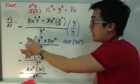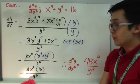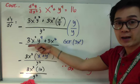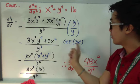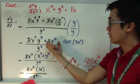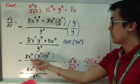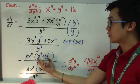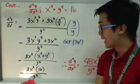Pwede pa natin i-simplify yung numerator. So again kailangan natin i-simplify bawat step natin. Yung numerator pwede natin i-simplify yan using the greatest common factor. Pull out natin ang 3x² kasi yun yung common dito sa dalawang term: 3x² and 3x⁶. With the greatest common factor 3x², pag nilabas natin ito, ang matitira na lang sa loob is x⁴ plus y⁴, all over y⁷. Malapit na tayo matapos.